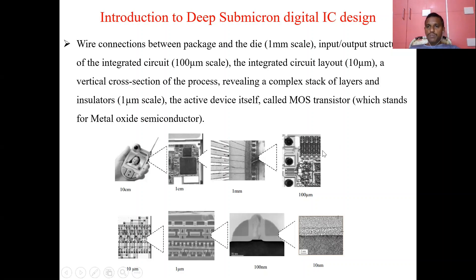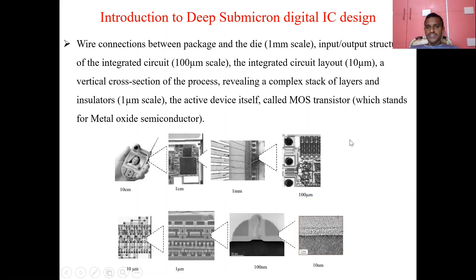Nowadays in our mobile phones, we are using 7 nanometer technology. If you observe any mobile's properties, they clearly state which technology is implemented — presently we have mobile phones using 7 nanometer technology, and the next coming one is 5 nanometer technology. The size of the transistor is reduced because of the requirements of less area. If you decrease the size of the transistor, only then will the chip size become very small. That's why the transformation is going from 10 centimeters down to 7 nanometers.